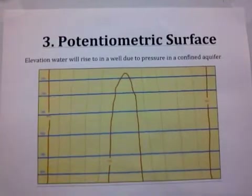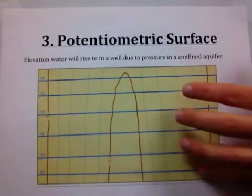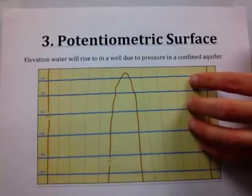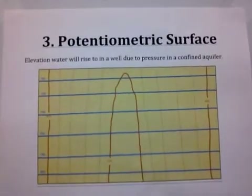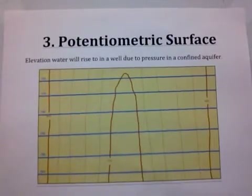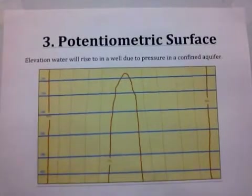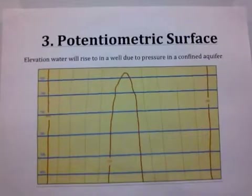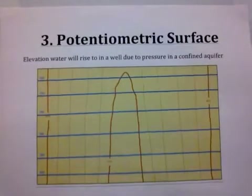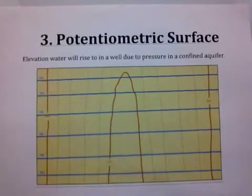We have two sets of contour lines on the same map — possibly the first time you've seen that. The brown lines are land elevation; the blue lines represent the potentiometric surface. What you'll often be asked to do is shade everywhere on this map where, if we drilled a well, we would not need to do any pumping — the water would rise to the land surface or higher on its own.